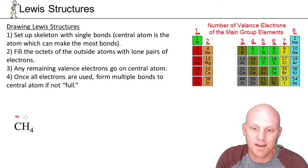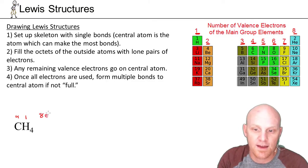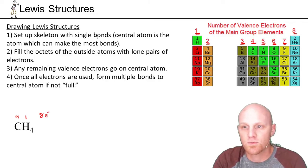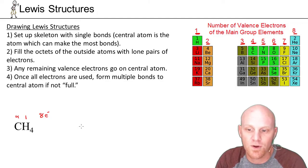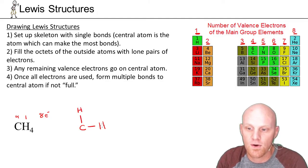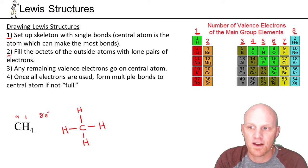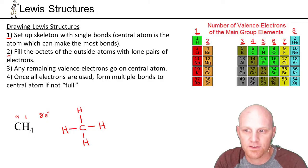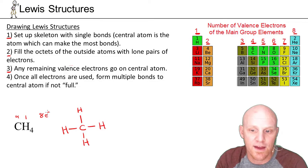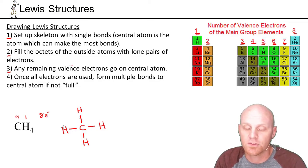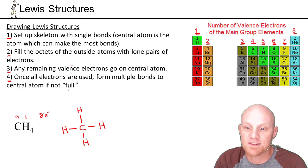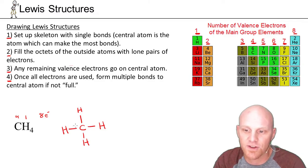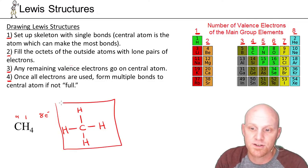For carbon in CH₄: carbon has four valence electrons, each of the four hydrogens has one, for a grand total of eight valence electrons. We set up a skeleton with single bonds — the central atom is the one that can make the most bonds, so carbon goes in the middle. Rule two: fill the octets of the outside atoms with lone pairs — hydrogen only wants two and already has two, so they're full. Rule three: any remaining valence electrons go on the central atom — but we've used all eight, so no electrons remain. Rule four: form multiple bonds to the central atom if it's not full — but carbon has eight, so multiple bonds are not needed. This is the Lewis structure for CH₄, methane.